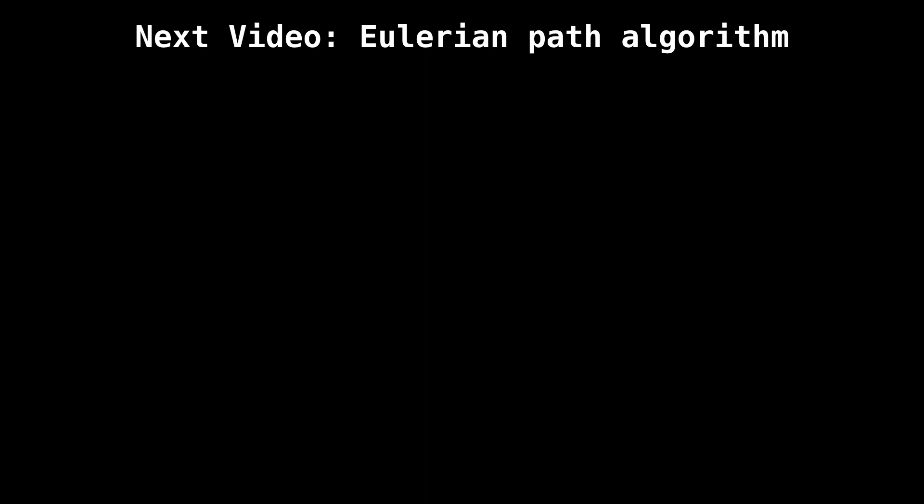Okay, that's it for this video on the existence of Eulerian paths and circuits for directed and undirected graphs. I hope that made sense. Please give this video a thumbs up if you learned something and also stick around for the next video where things get even more interesting and we have a look at an algorithm to actually find these Eulerian paths and circuits.